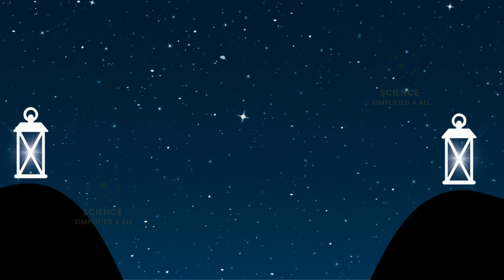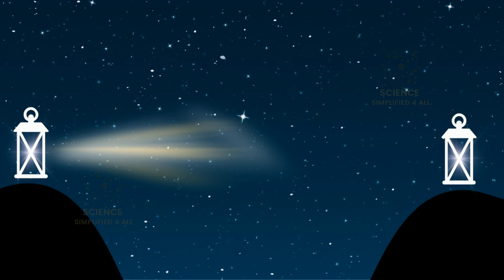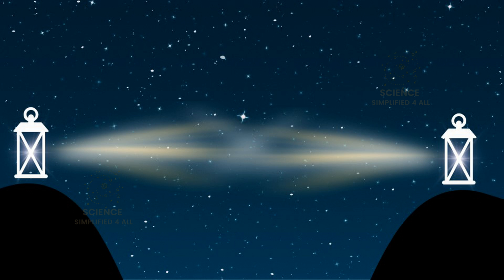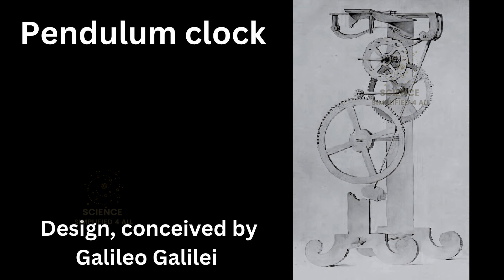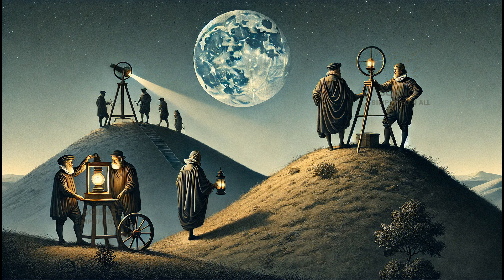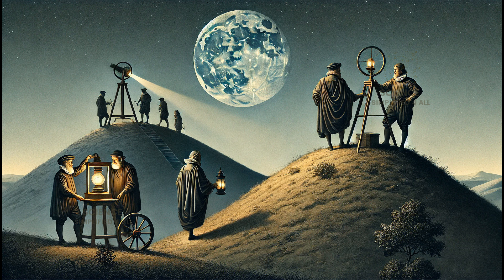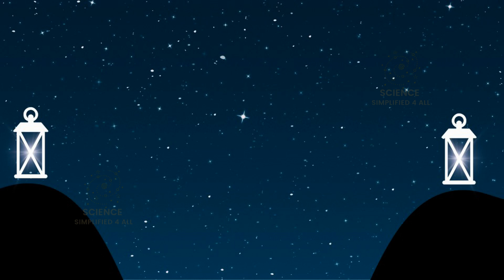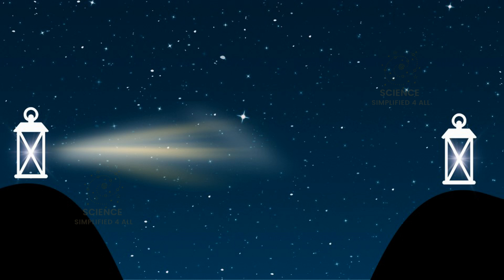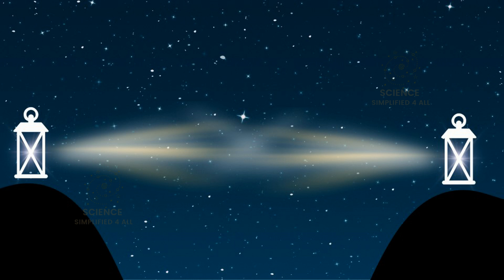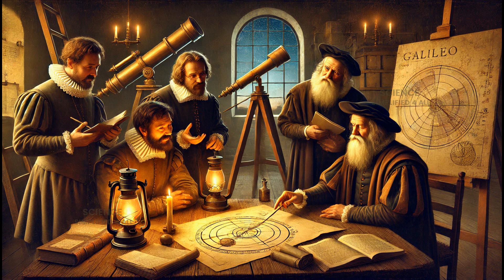Here is how the experiment worked. One team would remove the shutter from their lantern, allowing the light to travel to the second team on the other hill. As soon as the second person saw the light, they would immediately uncover their own lantern to send light back to the first hill. The goal was to detect a delay in the round trip of light between the two hills using the pendulum-based instruments. However, the distance between the hills was too short, and the reaction times of the participants were far too slow to observe the incredibly short time it takes for light to travel. As a result, they found no measurable delay.